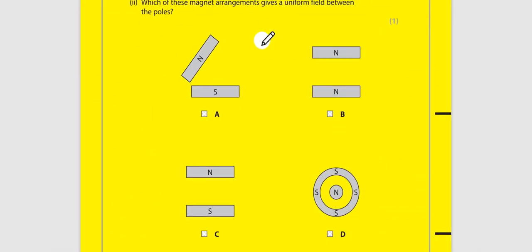Look at the diagram — which of these magnet arrangements gives a uniform magnetic field? First we have to learn what a uniform magnetic field is. A uniform magnetic field is one that has the same strength and direction at all points. A uniform magnetic field can be created by taking the opposite poles of two magnets and holding them close together. So the correct answer is C.